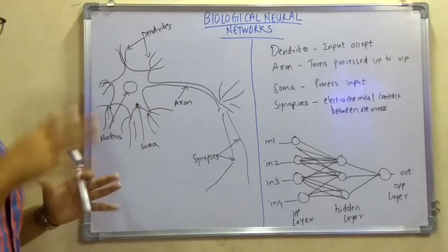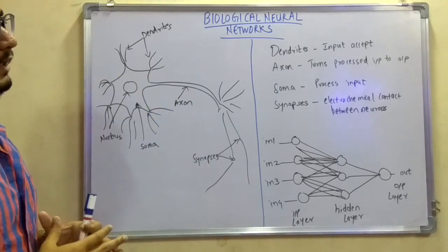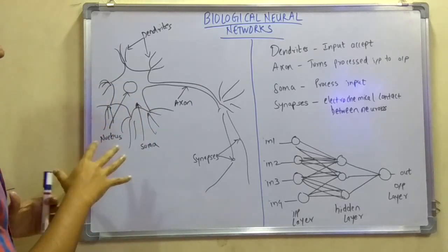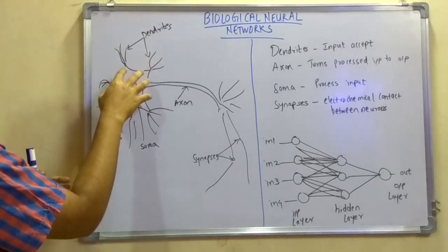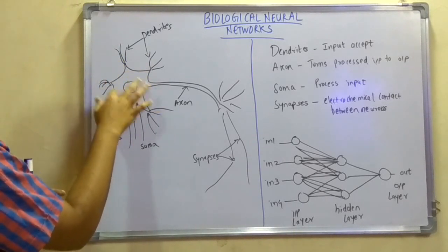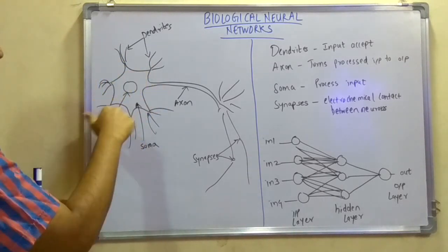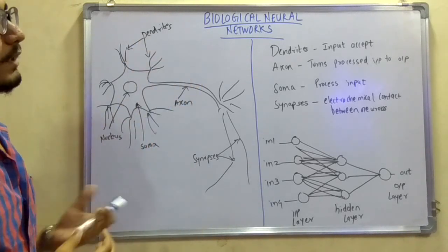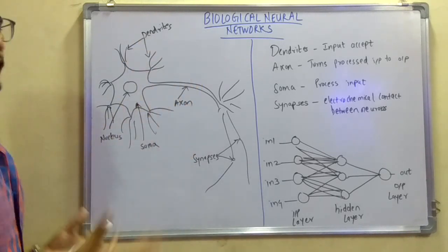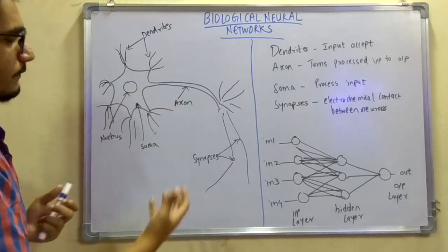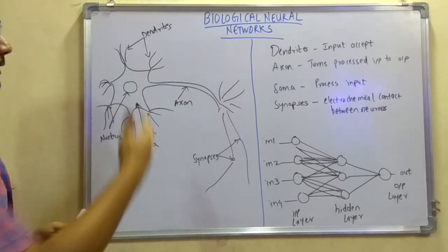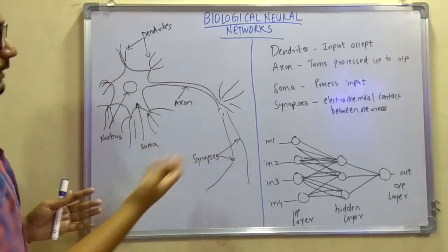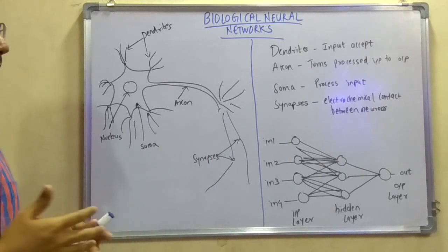The soma processes all the input. First of all, when it comes here, it goes into this, completely processes it, and then it will send to the axon for outputting. Then synapses are the electrochemical contact between the neurons. It just acts as an interconnectivity or link between two or more axons or dendrites. So anywhere it is present, these synapses are just electrochemical contact, nothing much about that.